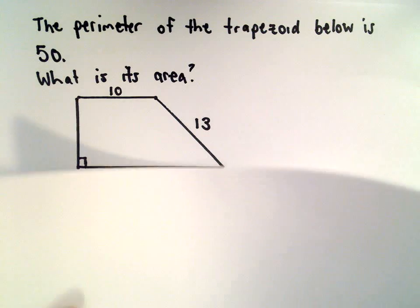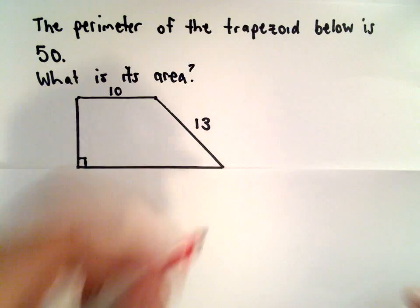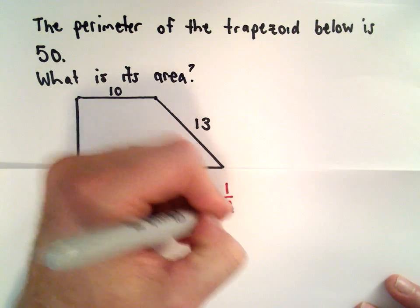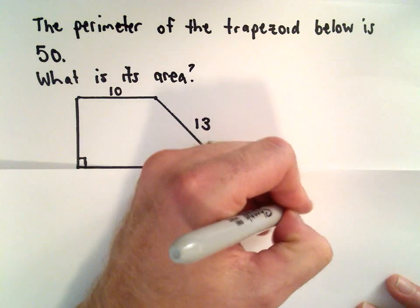Ultimately, we're wanting to find the area. So the formula for the area, and this will be given to you, it's one-half of the height multiplied by base 1 plus base 2.